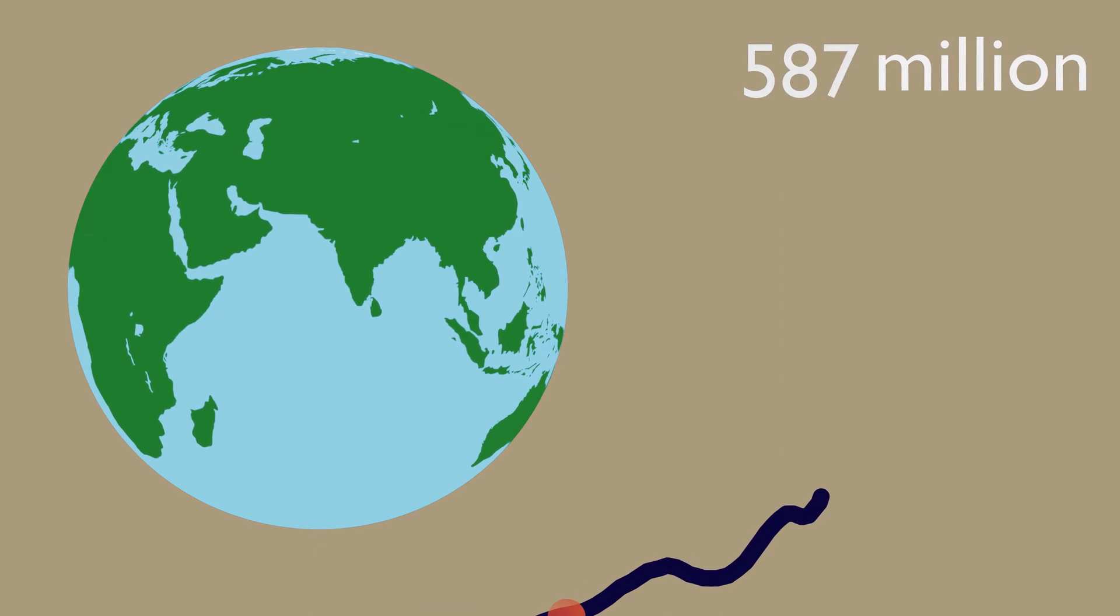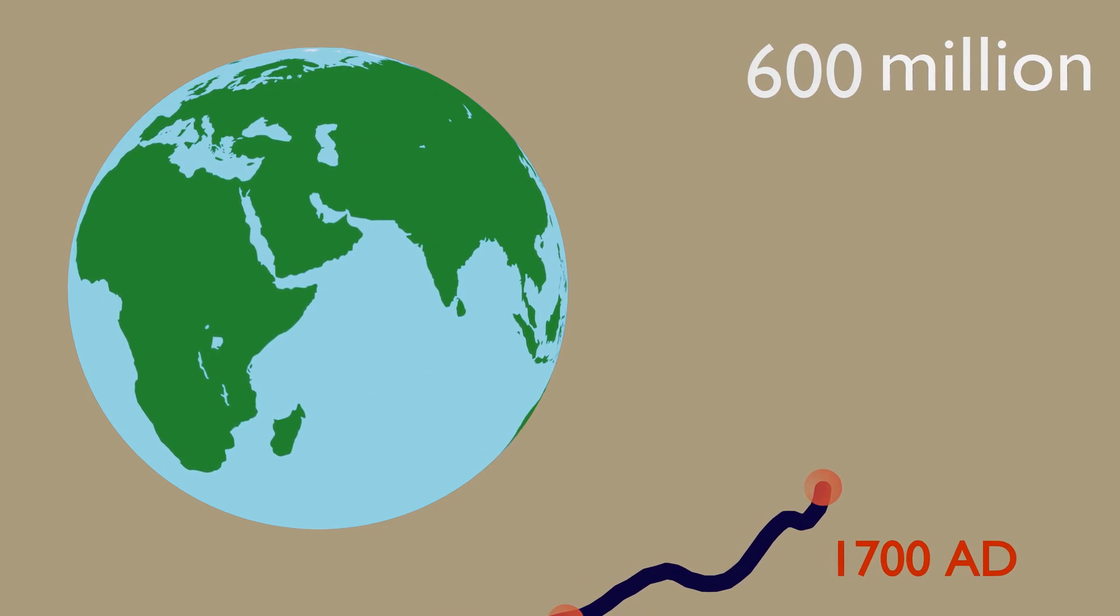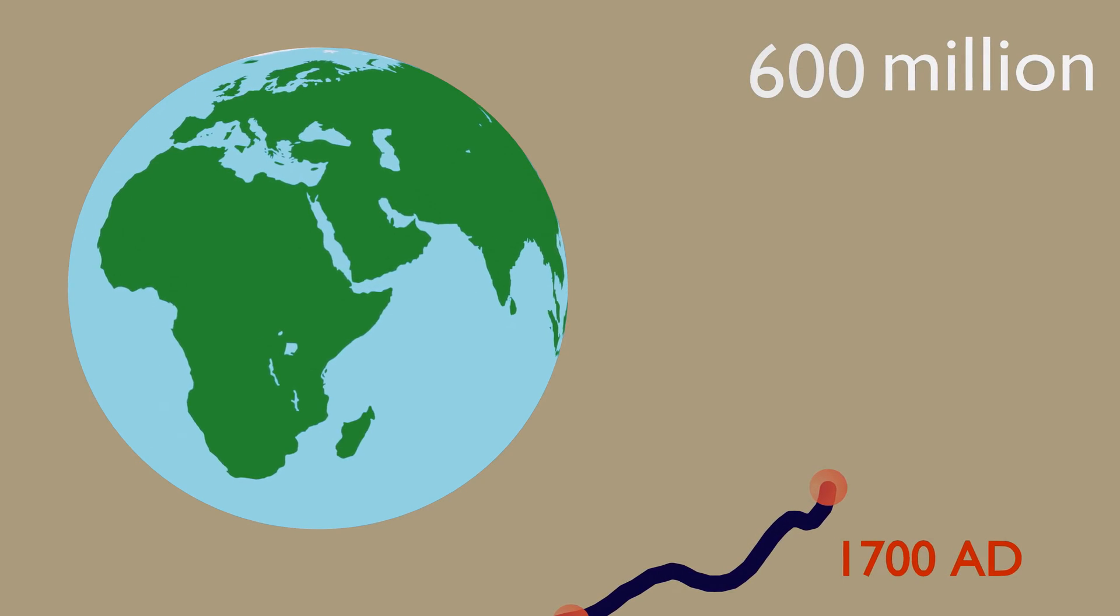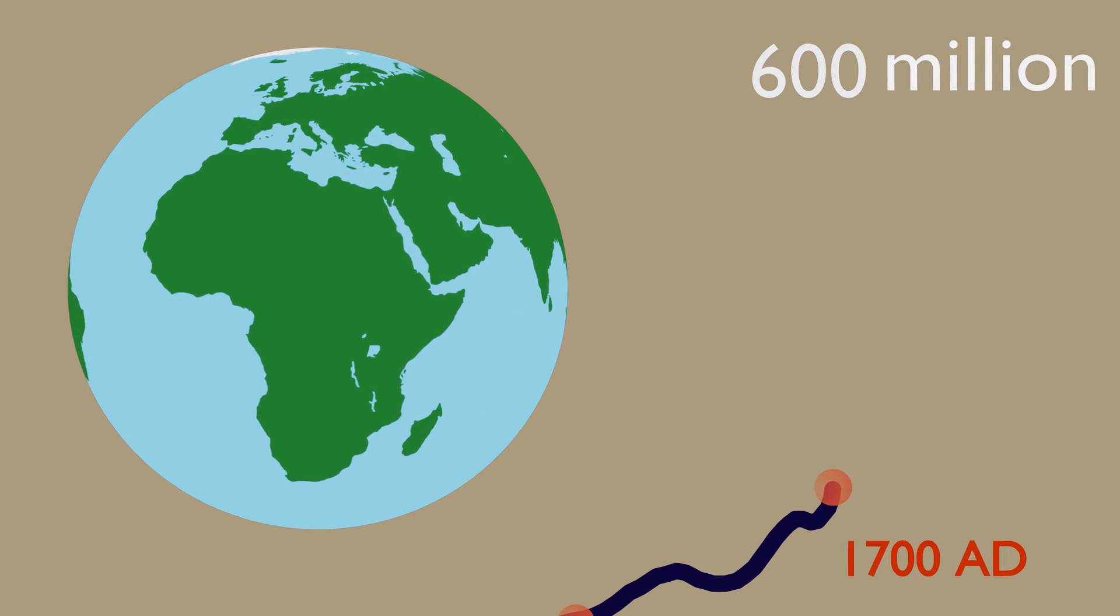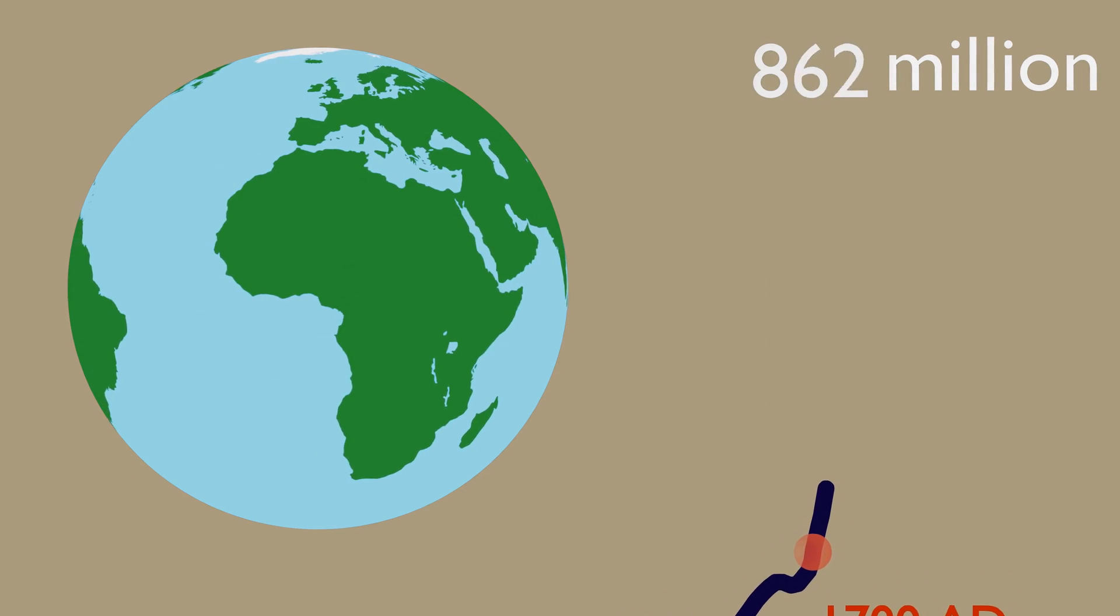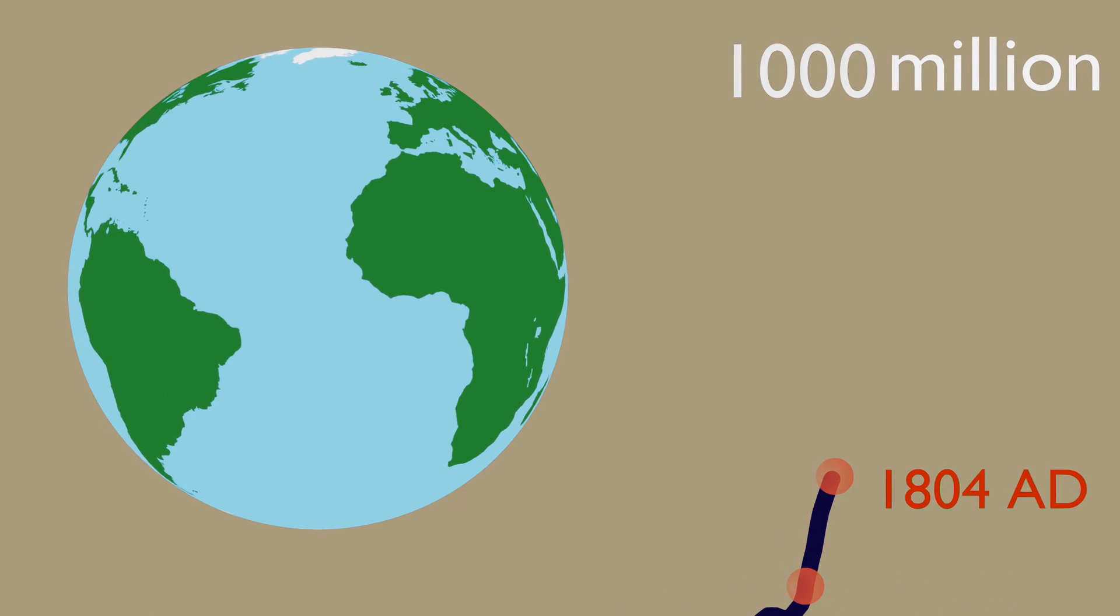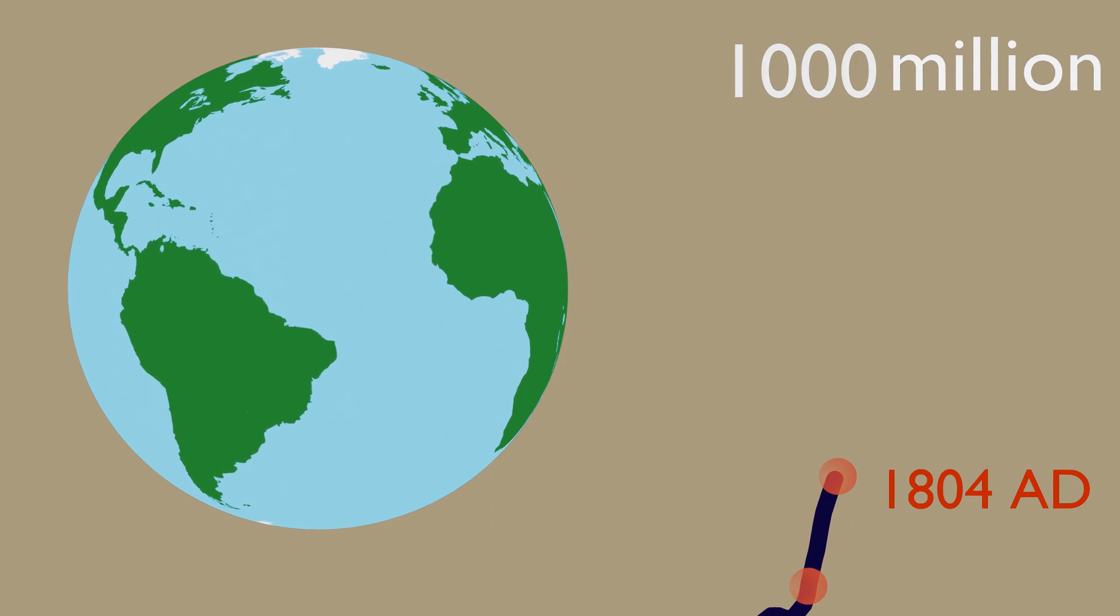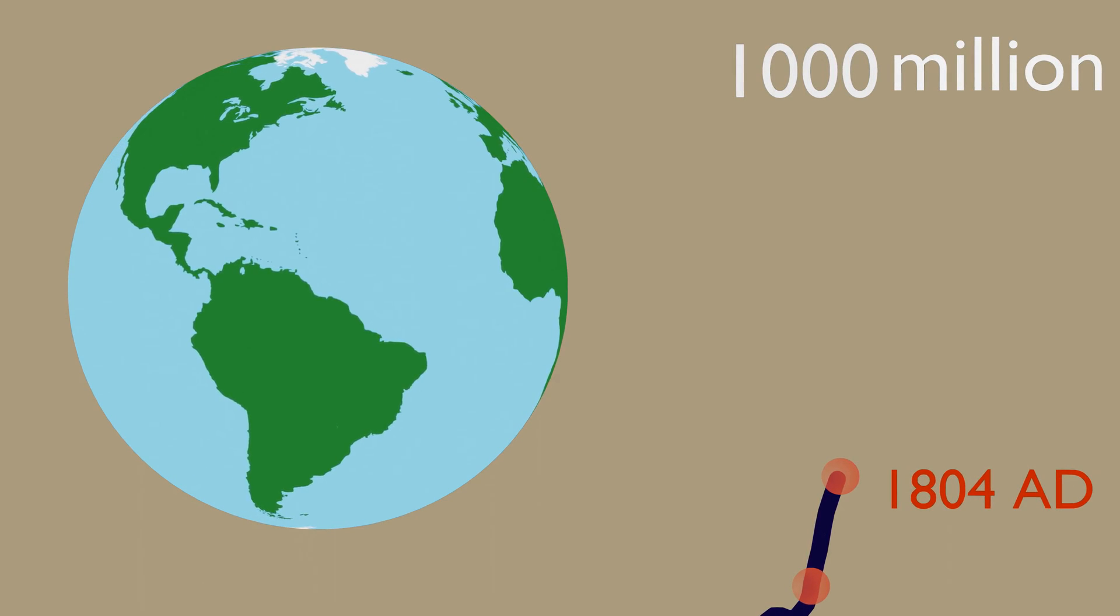Humanity arrived to the 17th century. World population reached around 600 million people. In 1804, human population reached the first billion. It took thousands of years to reach 1 billion people.